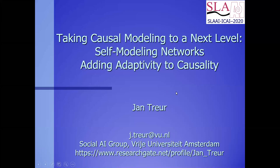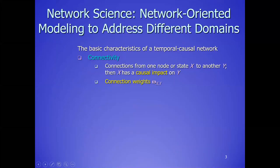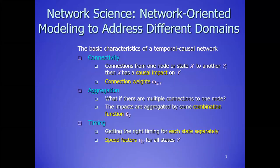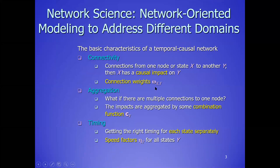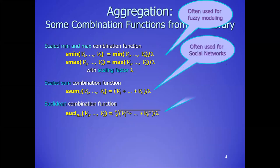Remember that the networks are described by three different types of characteristics: the omegas for the connection weights, the aggregation functions, the combination functions, and the speed factors. We have a number of functions in the library which can easily be extended and composed so that you can make an infinite number of them.